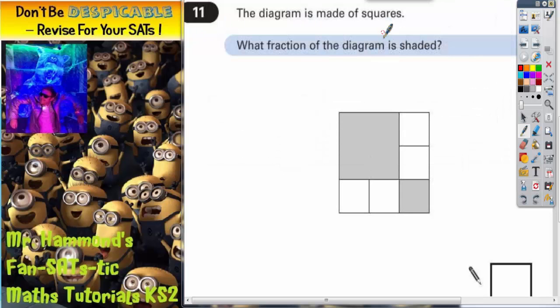Actually, question 11. The diagram is made of squares. What fraction of the diagram is shaded?